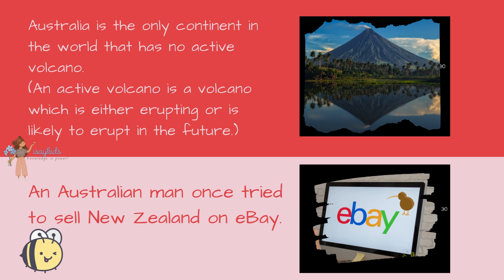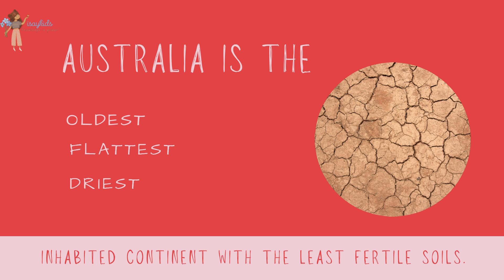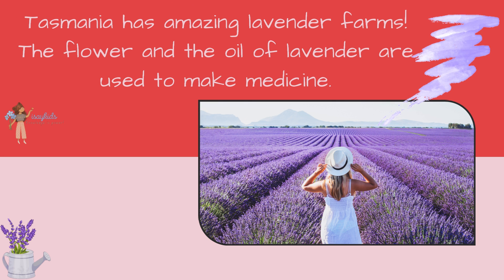An Australian man once tried to sell New Zealand on eBay — can you believe it? Australia is the oldest, flattest and driest inhabited continent, with the least fertile soils. Tasmania has amazing lavender farms, and the flower and oil of lavender are used to make medicine.